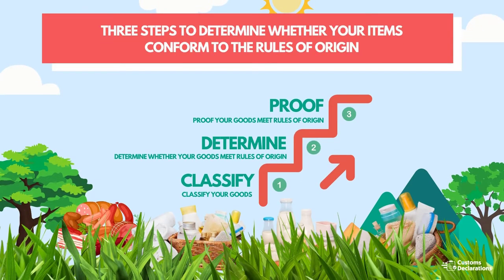Following are the major steps to comply with rules of origin to claim zero tariffs on your goods. Step 1: classify your goods. Step 2: determine whether your goods meet rules of origin. Step 3: proof your goods meet rules of origin.